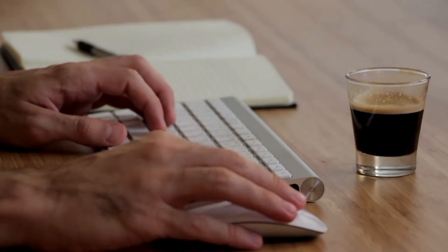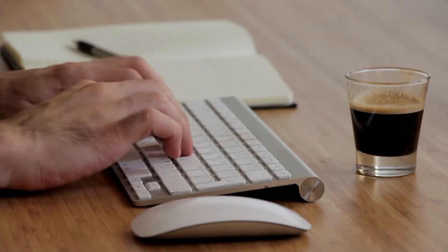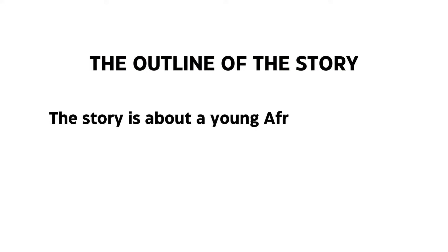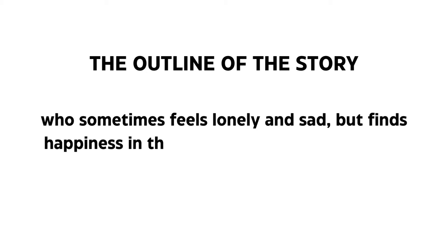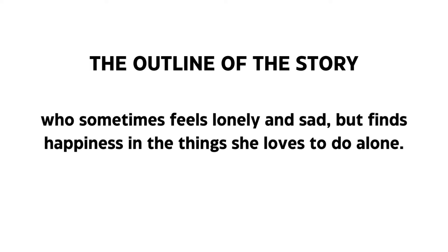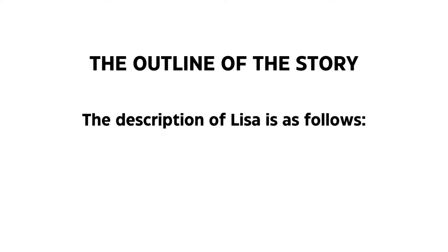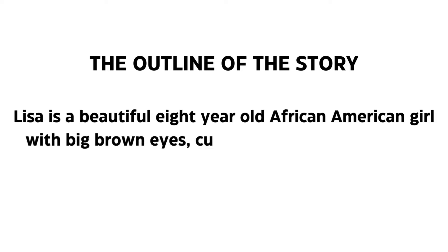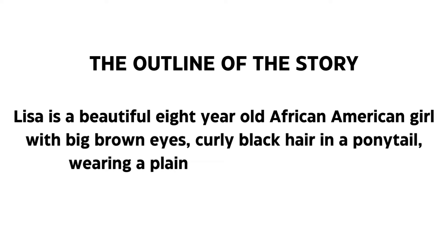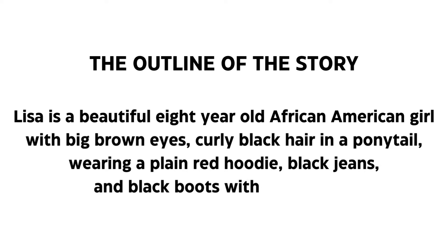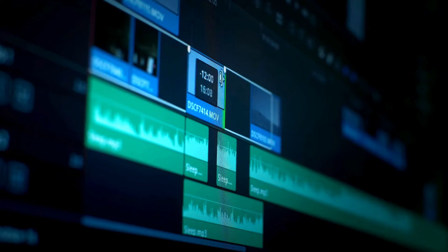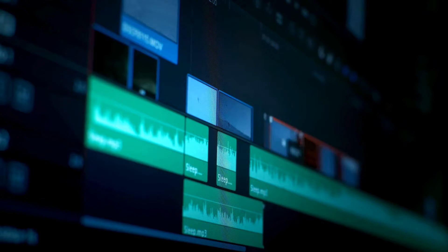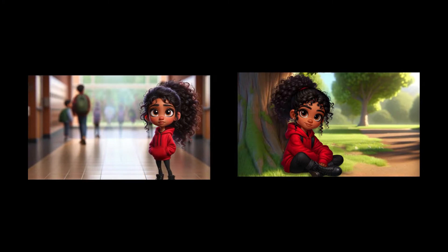Before creating the character in ChatGPT, let's create a general outline of the story and a character description. I'm going to write the story myself, but you can create the story using ChatGPT if you like. The story is about a young African-American girl named Lisa who sometimes feels lonely and sad but finds happiness in the things she loves to do alone. Lisa is a beautiful eight-year-old African-American girl with big brown eyes, curly black hair in a ponytail, wearing a plain red hoodie, black jeans, and black boots with black laces. I'll create just a few scenes — like Lisa sad in the school hallway and happy sitting under a tree.